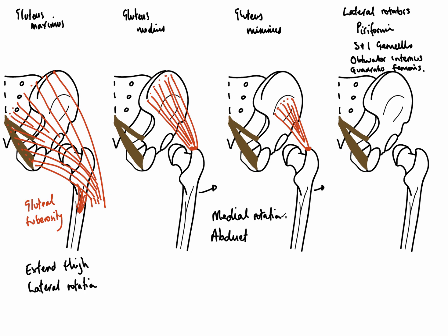Piriformis originates on the anterior surface of the sacrum — we're seeing the posterior surface here, but piriformis comes from the anterior surface. It passes out of the pelvis via the greater sciatic foramen, assuming a triangular shape as it heads toward the greater trochanter of the femur.